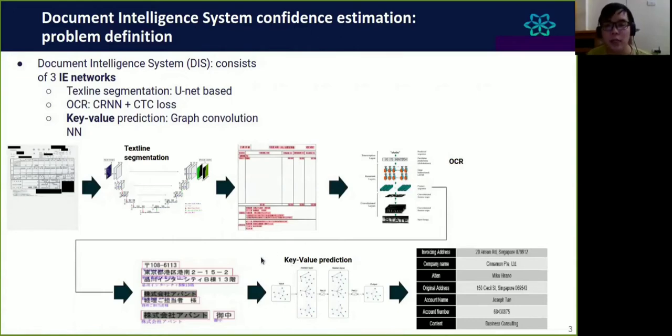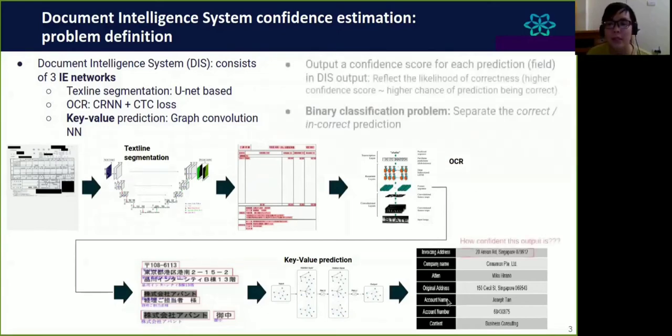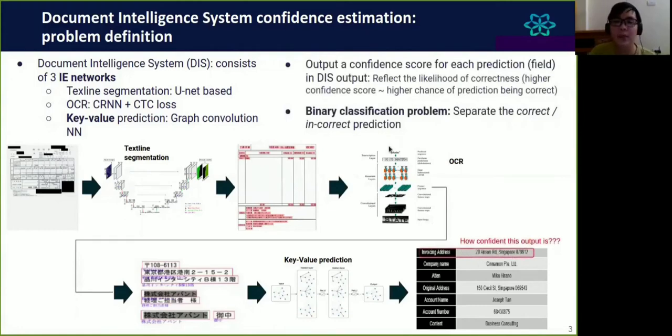After that, we can construct a graph where each node corresponds to a text line in the document image. The key-value prediction, the final model, is implemented by graph convolution neural network. This network will classify each node into a predefined key, for example, company name or account number. The final output of DIS is the key-value output. The question here is how confident is this output. We introduce the confidence score model that outputs a confidence score for each prediction in DIS output. This score reflects the likelihood of correctness. We expect that higher confidence score corresponds to higher chance of this prediction being correct. This problem can be formulated as a standard binary classification problem, where the model learns to separate correct and incorrect predictions.